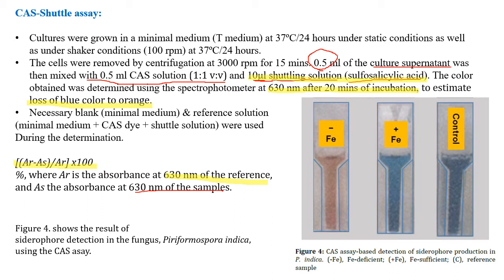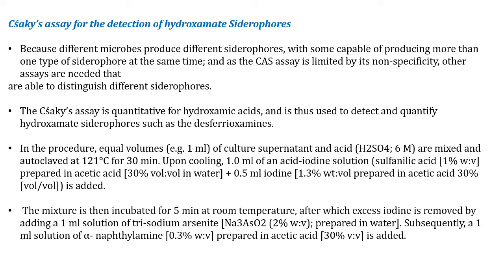Next is Saki's assay for the detection of hydroxamate-type siderophores. Because different microbes produce different types of siderophores, and the CAS assay is limited by its non-specificity — it cannot differentiate between different types of siderophores — other assays are needed. Saki's assay is quantitative specifically for hydroxamic acids.